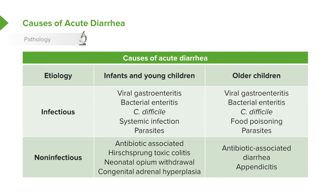Neonates exposed to opiates in utero may present with diarrhea as a common result of withdrawal. Patients with congenital adrenal hyperplasia will often have diarrhea at birth. In older children, we again see antibiotic-associated diarrhea. Appendicitis may cause diarrhea, but it's more common that they have vomiting and abdominal pain.